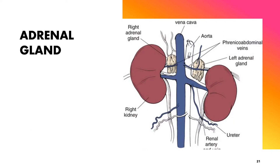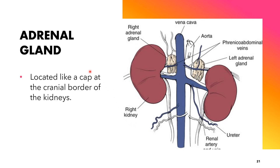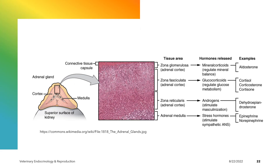The adrenal gland is located like a cap at the cranial border of the kidney. It is responsible for the production of adrenal steroids, including the mineralocorticoids, glucocorticoids, and androgens. It is also responsible for the production of the stress hormones epinephrine and norepinephrine, which are classified as amine hormones.